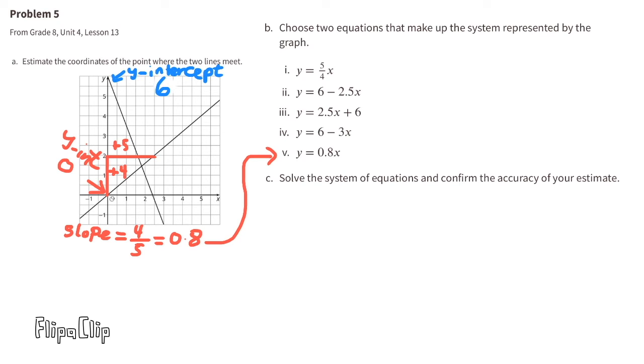For this line, we have a Y-intercept of 6. And the slope goes down 5 and to the right 2. So that would be a negative 5 halves slope. And negative 5 halves equals negative 2 and a half. So the slope could be negative 2 and a half, which is the same as negative 2.5. This matches up perfectly with equation number 2. Y equals 6 minus 2.5 X. The 6 would be the Y-intercept, and the minus 2.5 would be the slope.